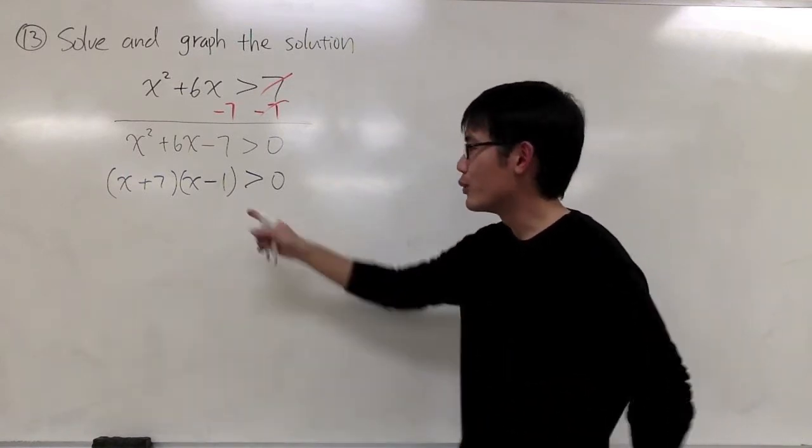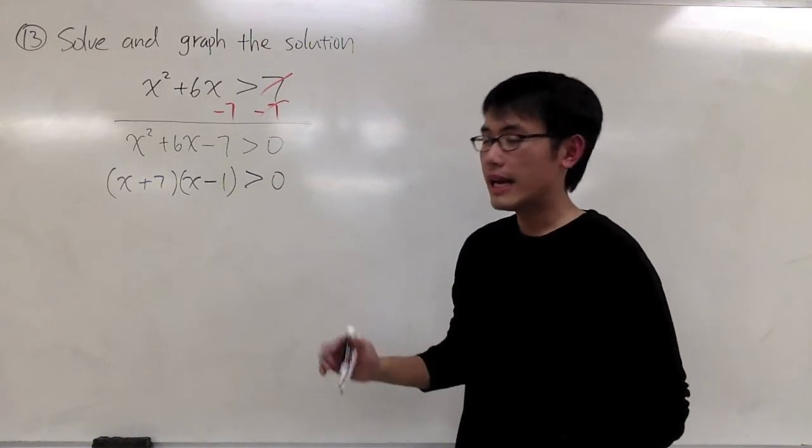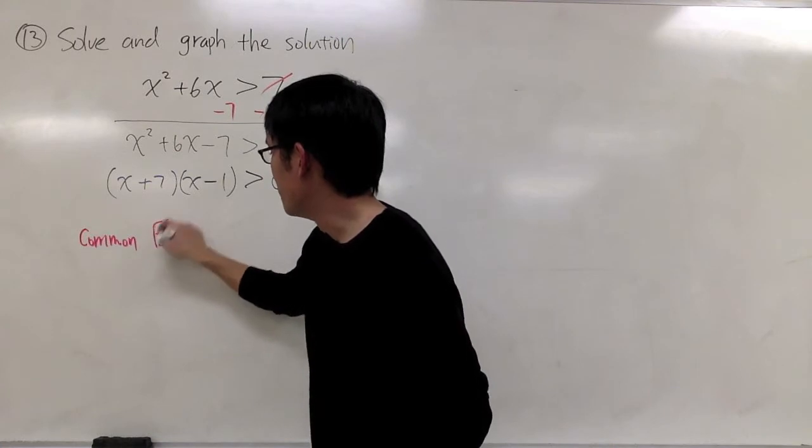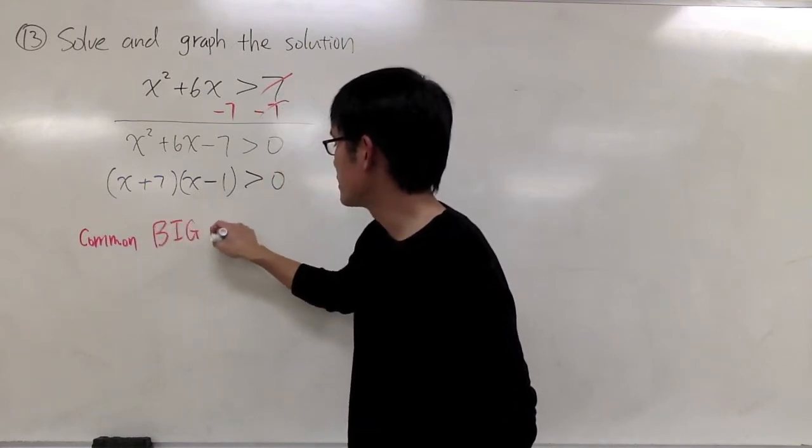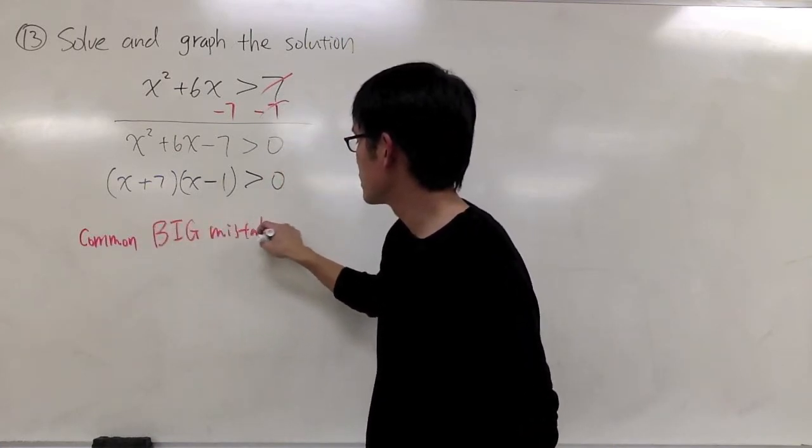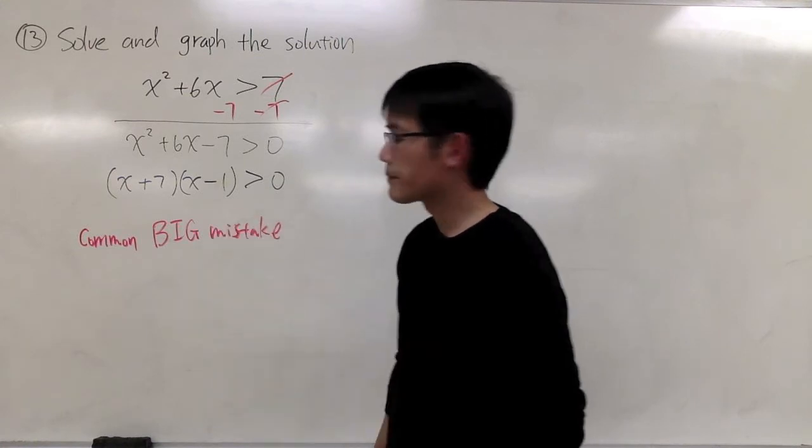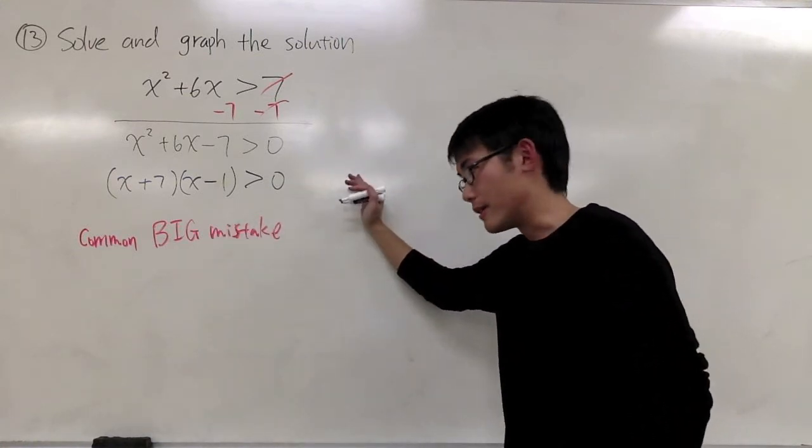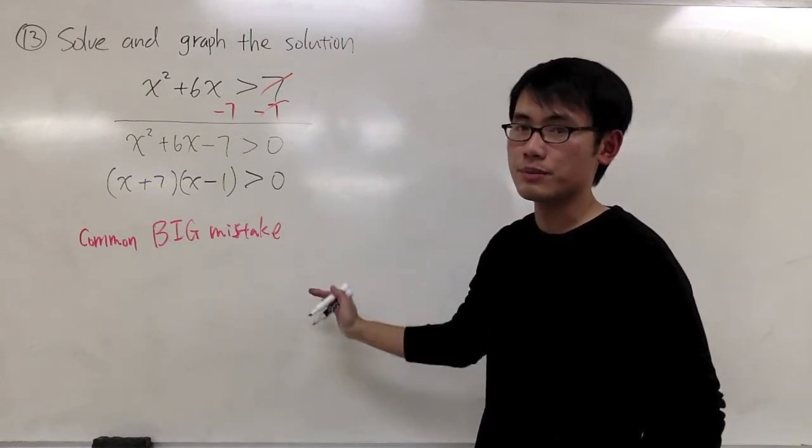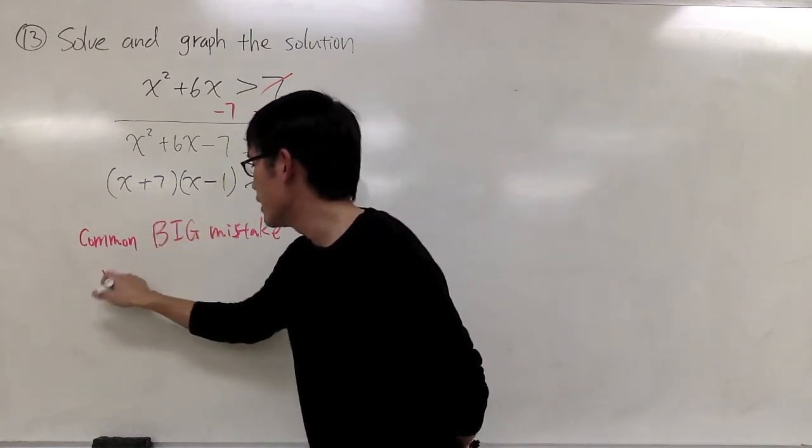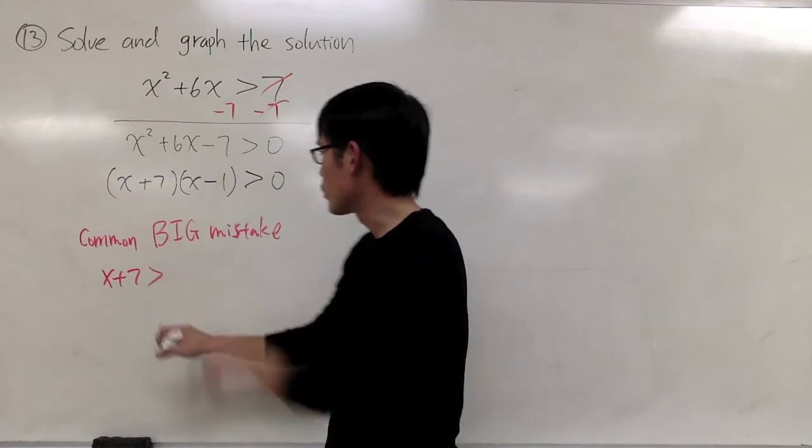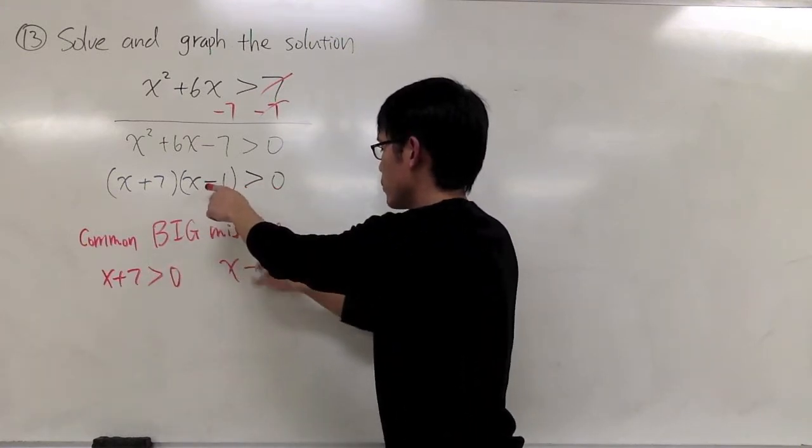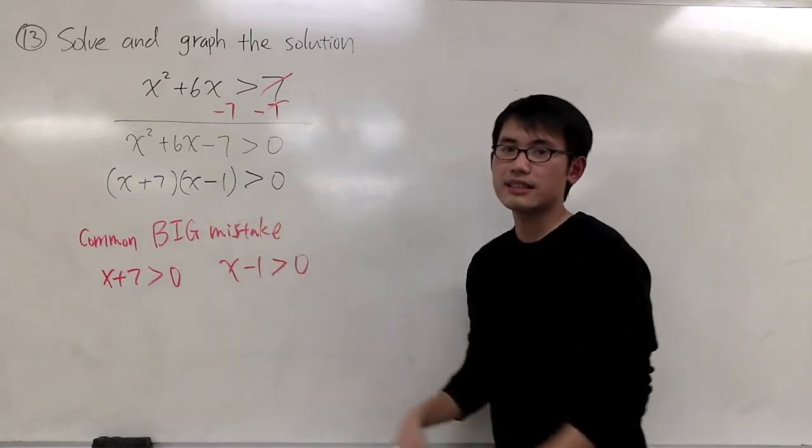But in this case, we have a greater than symbol right here. Let me just point out a common mistake. Perhaps I will say this is a common big mistake. Usually at this stage, a lot of students, the common mistake would be to just write down x plus 7 is greater than 0, and the next one is x minus 1 is greater than 0.